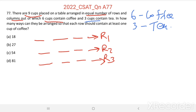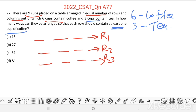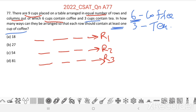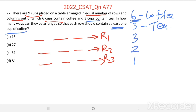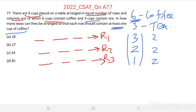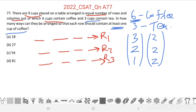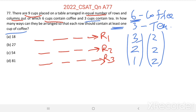In how many ways can they be arranged so that each row contains at least 1 cup of coffee? You can arrange the 6 cups of coffee as 3-2-1 or 2-2-2. That means either each row has 2 cups of coffee, or one row has 3, another has 2, and the third has only 1 cup of coffee.